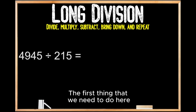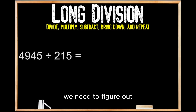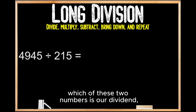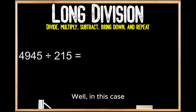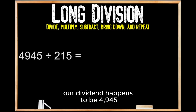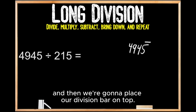The first thing we need to do is set up this division problem. We need to figure out which of these two numbers is our dividend — the one that's being divided. Our dividend is 4,945, so we're going to write our dividend and then place our division bar on top.